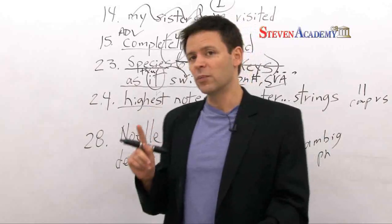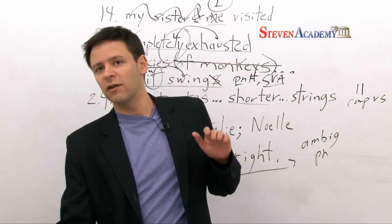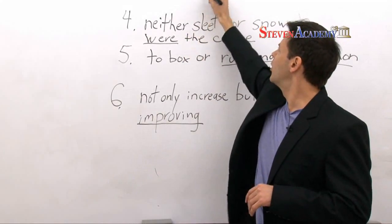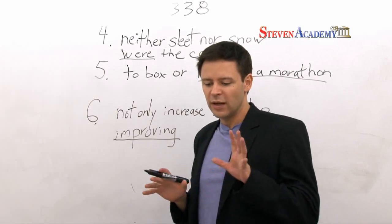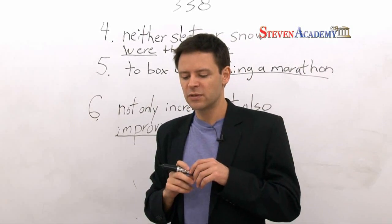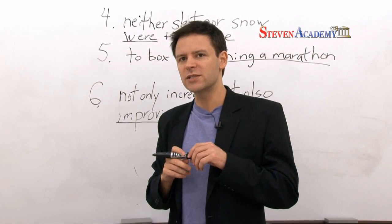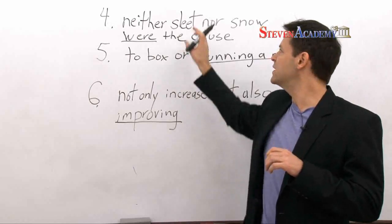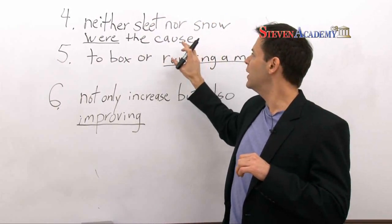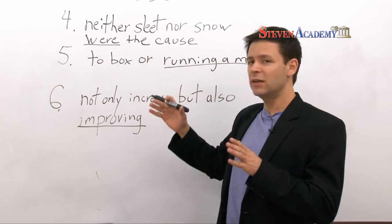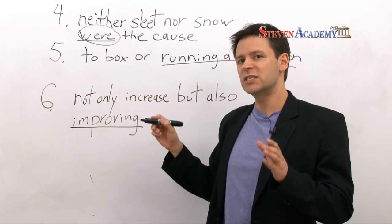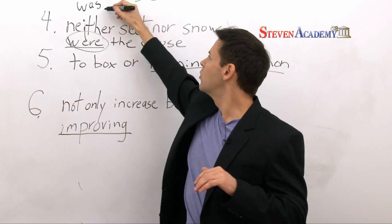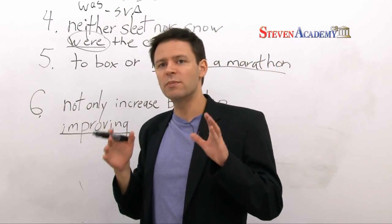Now let's go to the other pages we had for homework: page 338 of the same book, questions four, five, and six. The first question: 'The postman assured his customers that neither sleet nor snow were the cause.' This is exactly something I talked about yesterday with either/or and neither/nor. Neither of these individual entities — sleet and snow — 'neither were the cause.' No — 'neither was the cause,' calling for a singular verb to match this tricky but singular subject. What we need is 'was.' Another subject-verb agreement error.